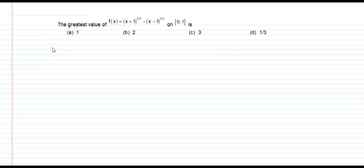Find the greatest value of f(x) = (x+1)^(1/3) - (x-1)^(1/3) on [0, 1].